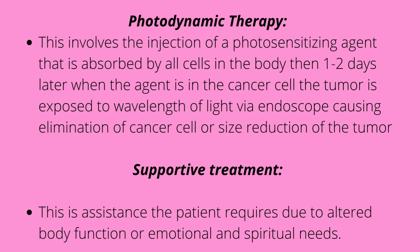Photodynamic therapy involves the injection of a photosensitizing agent that is absorbed by all cells in the body. Then, one to two days later, when the agent is concentrated in the cancer cells, the tumor is exposed to a wavelength of light via an endoscope, causing elimination of the cancer cell or size reduction of the tumor. So you inject the photosensitizing agent, let it get absorbed into the cells, and when the patient is exposed to the targeted light waves, that cell either dies or shrinks.